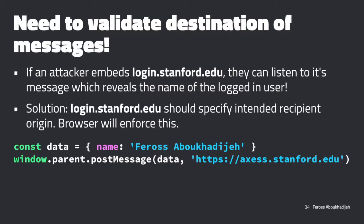Student question: what if you want to enable multiple different websites to receive the message? One approach is to pull the origin of the parent page and use that in the string. Another way is you can pass an array of multiple origins - though that would need to be double-checked. But yes, there is a way to do that.